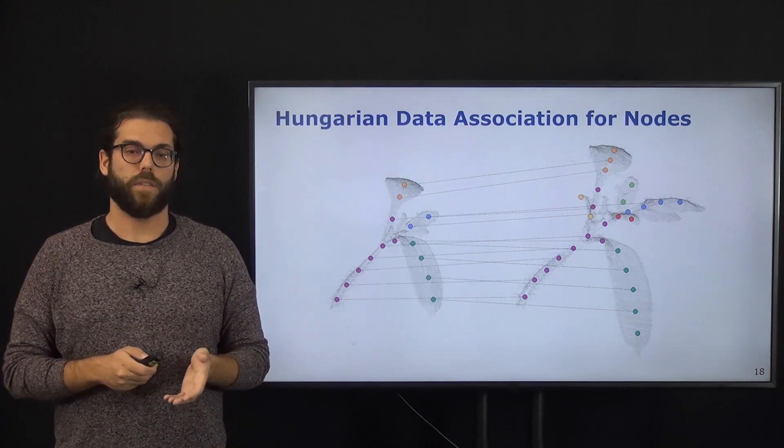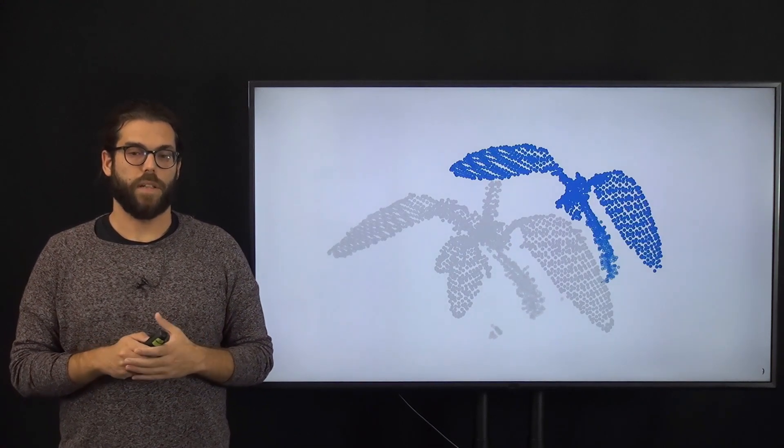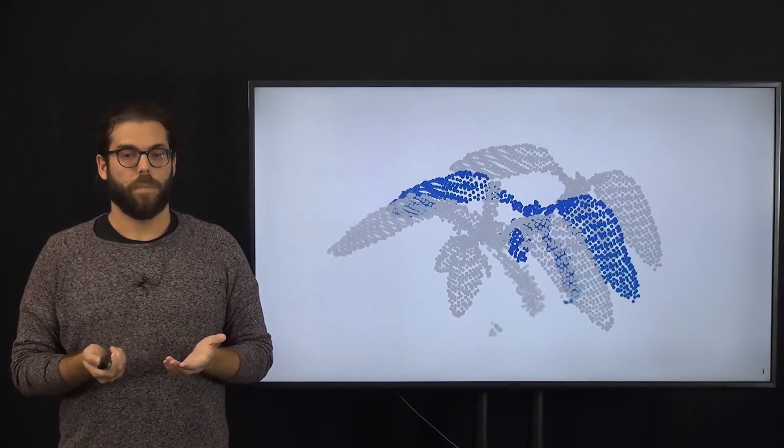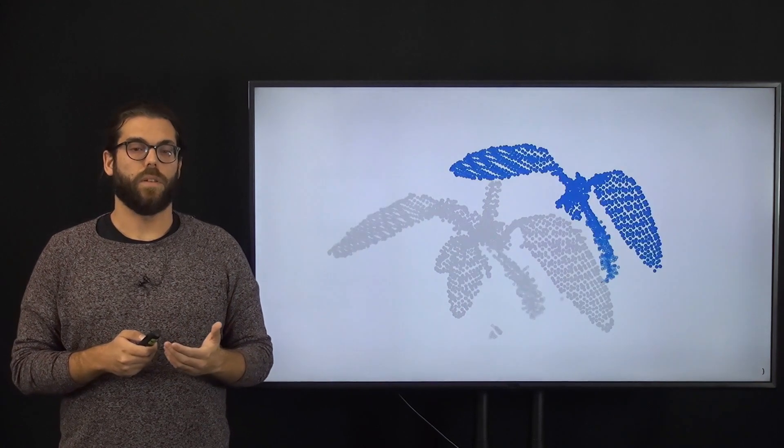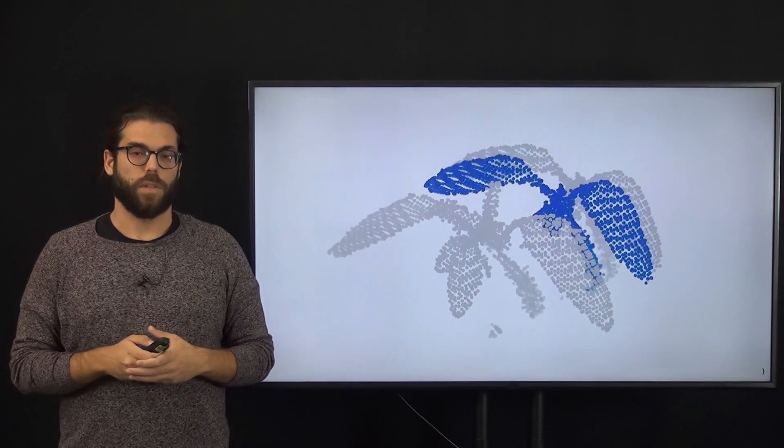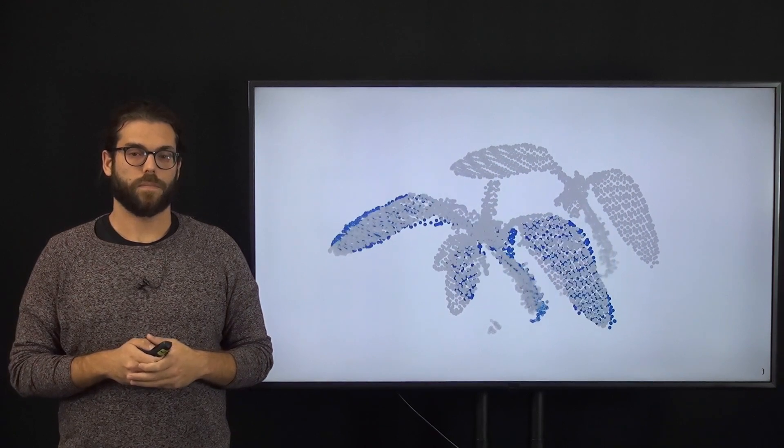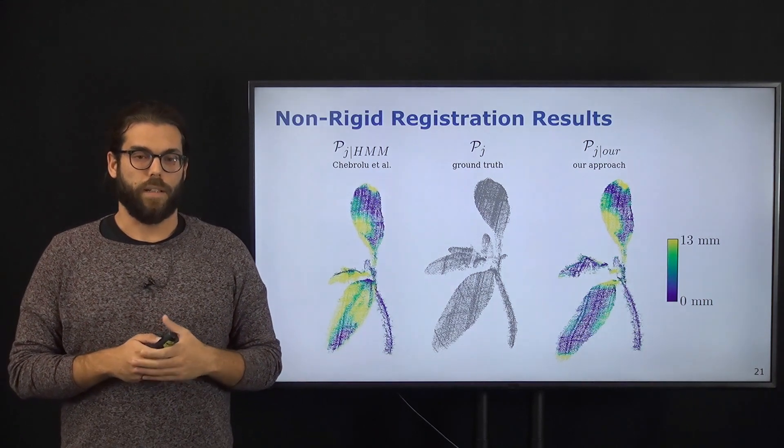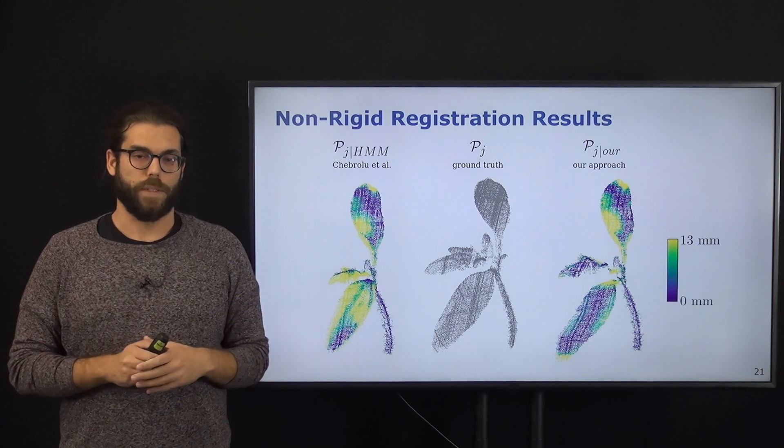These data associations are then used to perform a non-rigid registration that will deform the point cloud P to the point cloud Q. As you can see, the point cloud is slowly converging to the second point cloud. This data association and non-rigid registration approach leads to better results compared to previous approaches.